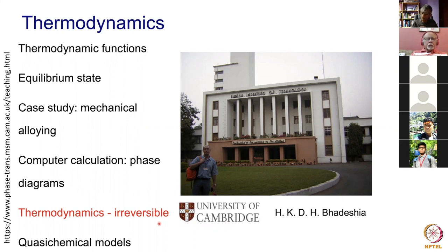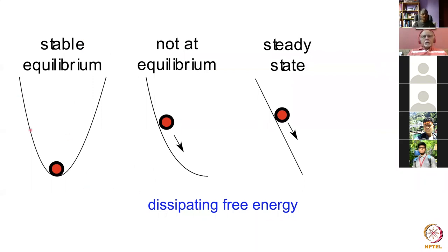This subject is not exactly thermodynamics and neither is it exactly kinetics. Stable equilibrium means that if I give a ball an infinitesimal perturbation it will return to its original location. This clearly is not equilibrium because the ball is rolling down a non-linear hill and dissipating free energy. The difference is that this other case is a steady state process because we have a constant gradient, so an observer on the ball won't see any change even though free energy is being dissipated. The thermodynamics of irreversible processes is strictly about steady state processes.